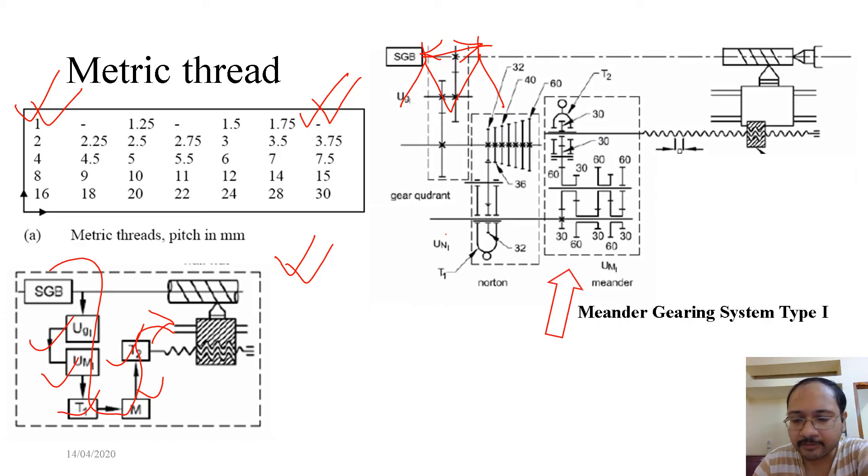In the complete schematic of the kinematic chain, we observe these are the different gear ratios which we have already seen before. This we have discussed in Module 9b, which is the meander gearing system type 1.